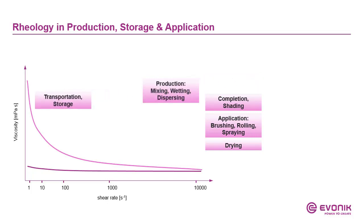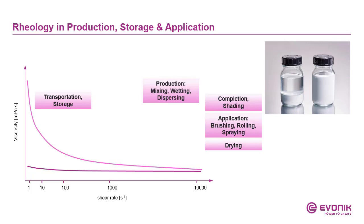During transportation and storage, we want to prevent the settling of the solid content of the coating. Therefore we need higher viscosity, and as no shear forces are applied, the viscosity is high — and we prevent the settling. If we want to complement the coating, add some tinting pastes or a second component, then we need to lower the viscosity again, so we stir, we apply shear forces, and therefore the viscosity will go down again.